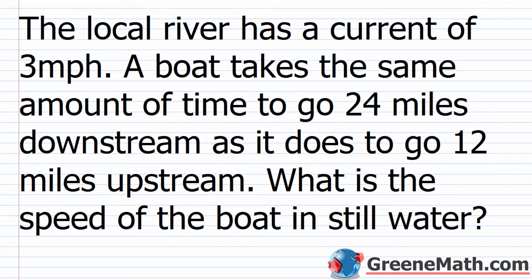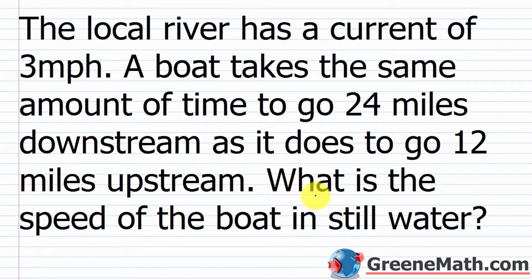Let's take a look at the first problem. The local river has a current of 3 miles per hour. A boat takes the same amount of time to go 24 miles downstream — that's with the current — as it does to go 12 miles upstream, which is against the current. What is the speed of the boat in still water?